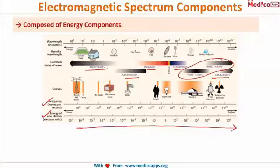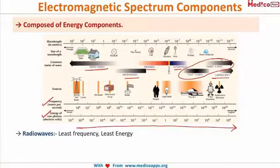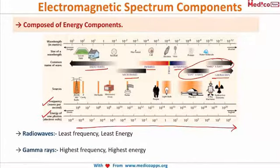These points are important because they can be asked in your VWYC or as an MCQ. X-rays have high energy and frequency, and gamma rays have the highest energy and frequency, while radio waves have the least frequency and least energy.